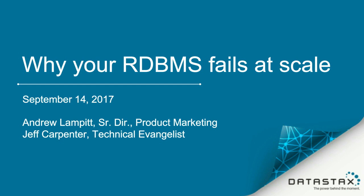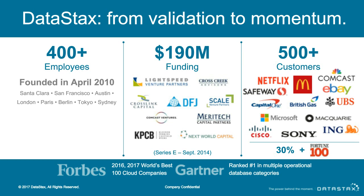I'll take it back from Jeff and close out over the following few slides. For those not aware of DataStax, here's a quick overview. We've come a long way very quickly from 2010 when we launched as a company. We now have about 400 employees, nearly $200 million in funding, and more than 500 customers — including leading brands like Netflix, McDonald's, Comcast, and Safeway. We've received industry recognition from Forbes as a top 100 cloud company, and Gartner scored DataStax number one in multiple operational database categories in a recent critical capabilities report.